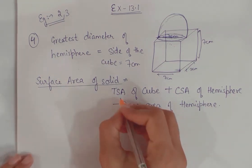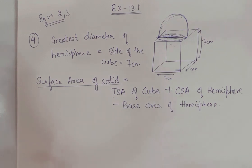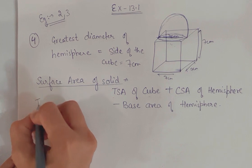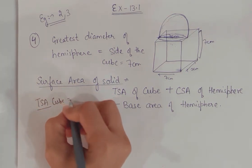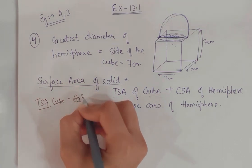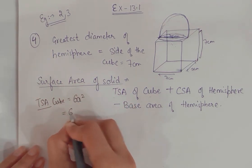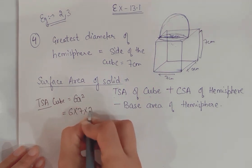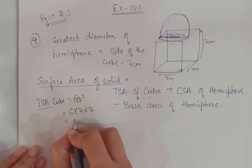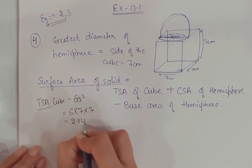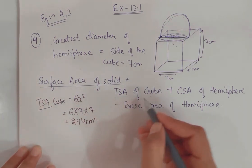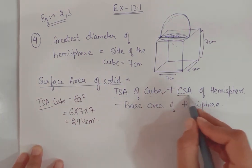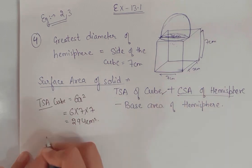Now let's calculate each part. Total Surface Area of the cube: the formula is 6a². That is 6 × 7 × 7, which gives you 294 cm². This is the total surface area of the cube.